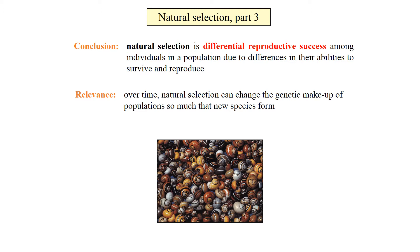What's the relevance of this to evolution? We hypothesize that over time, many generations of natural selection can change the genetic makeup of populations so much that new species form. This is our mechanism by which new species form.